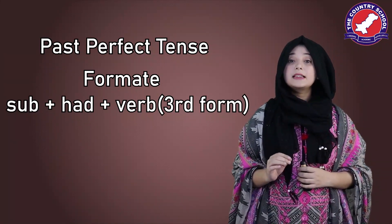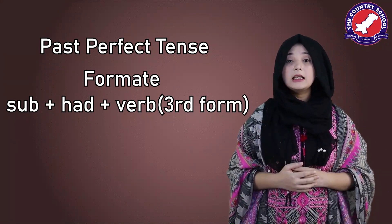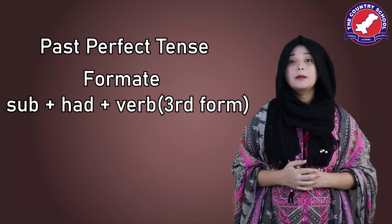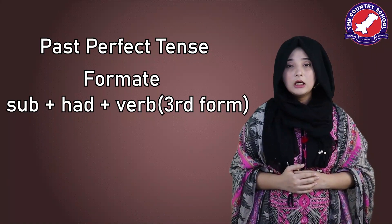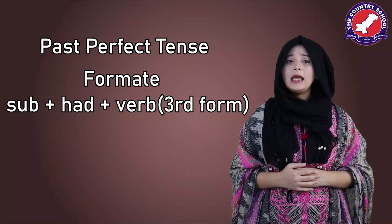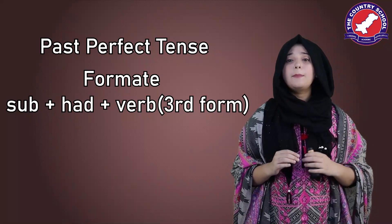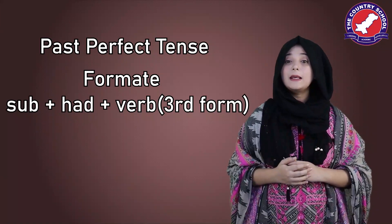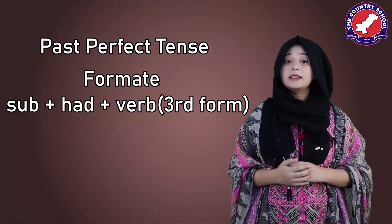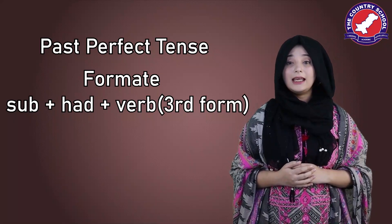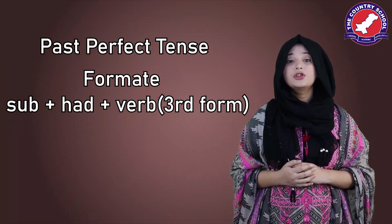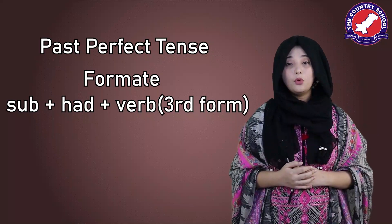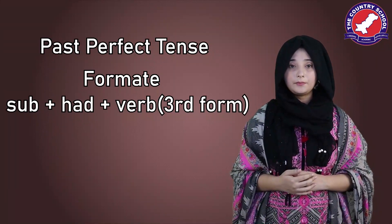It expresses the idea that something happened before another action in the past. In past perfect tense, there is always a sequence of actions — it tells us that one action happened after another, or that one task ended and then another began.